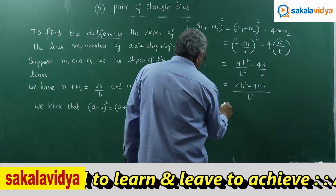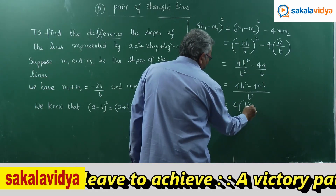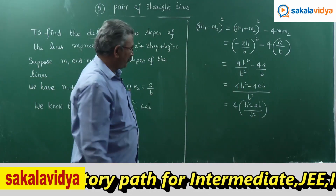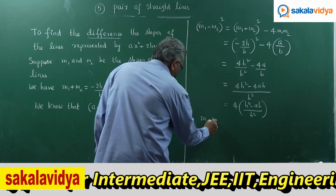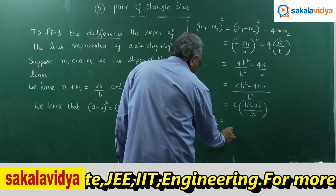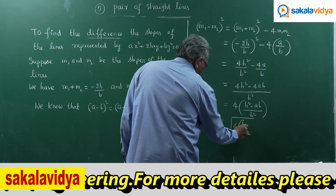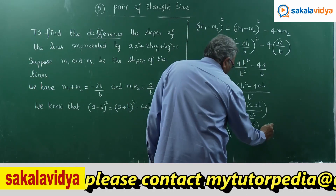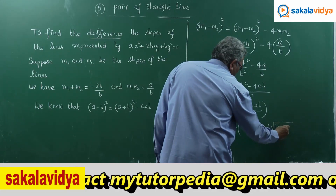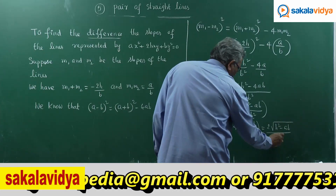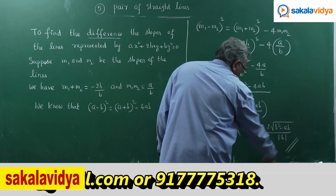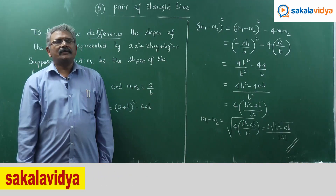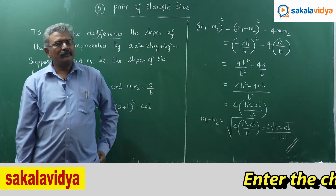Taking the square root, M1 - M2 = √[4(h² - AB)/B²], which simplifies to 2√(h² - AB) / |B|. This is the difference of the slopes of the lines represented by Ax² + 2hxy + By² = 0.